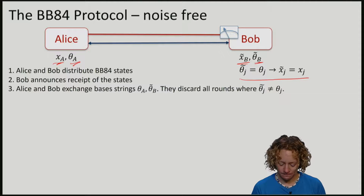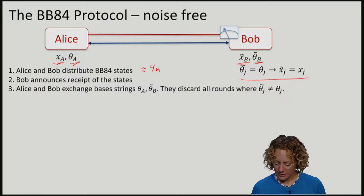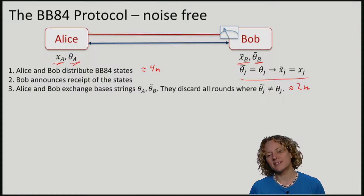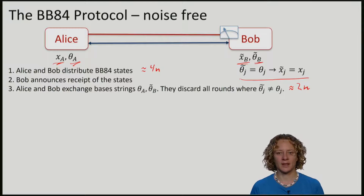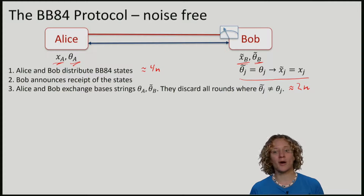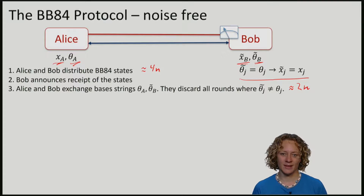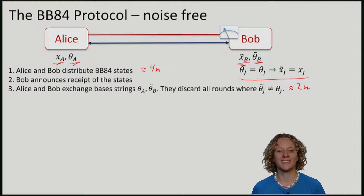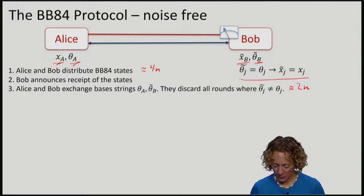So if we start with roughly 4n bits, after this step — because Bob and Alice choose their bases randomly — we are left with roughly 2n bits. We are now in a situation where they share a shorter string, namely the string corresponding to all positions where they measured in the same basis. So if there is no noise, by the properties, all of their bits should now agree — very close to the situation we had before for the special classical channel where Bob didn't have any noise.